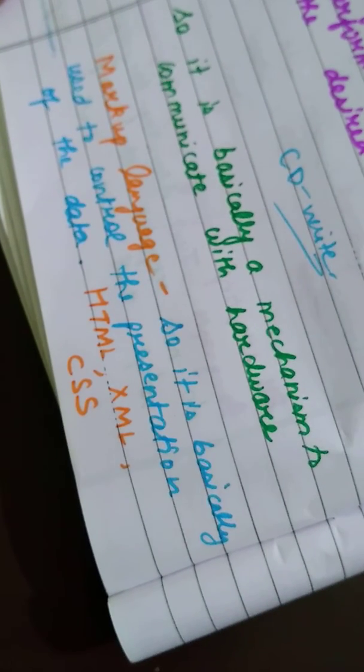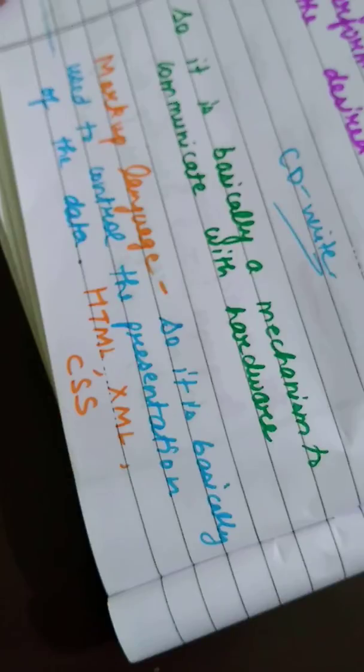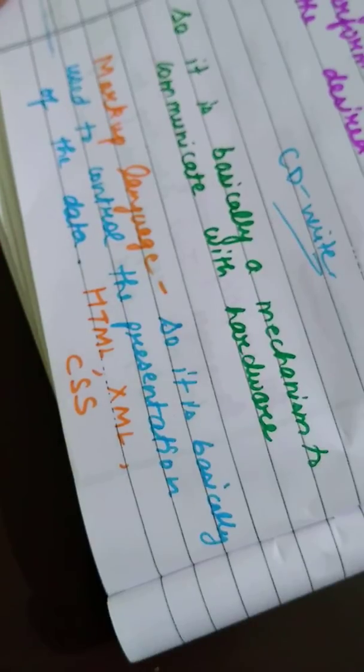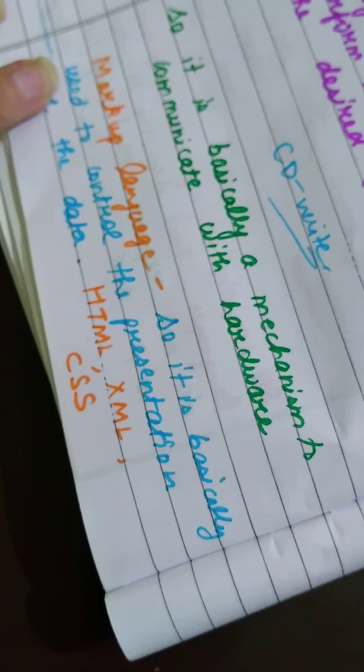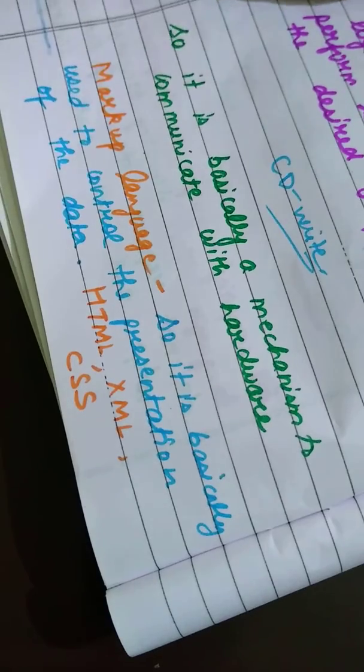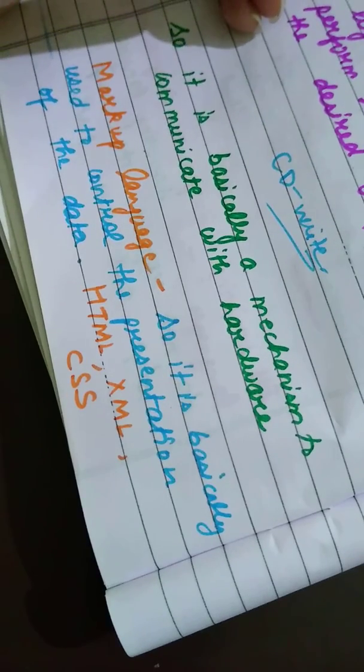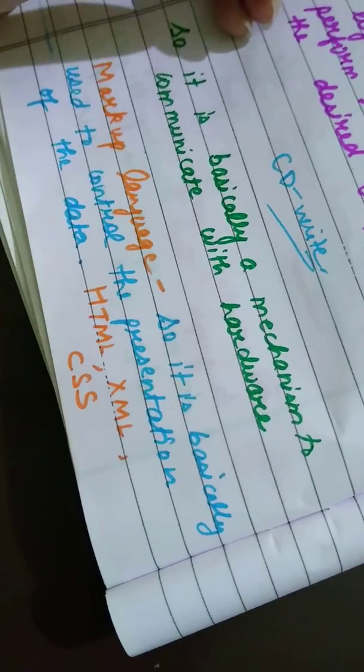So markup language is basically used to control the presentation of the data. You need to know the title and subtitle, the heading. All the things need to be systematically organized. The look of your website or any application is organized using markup language like HTML or XML, Extensible Markup Language.